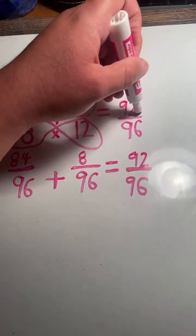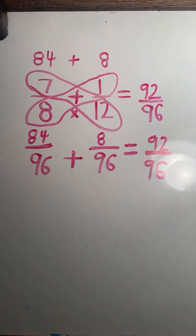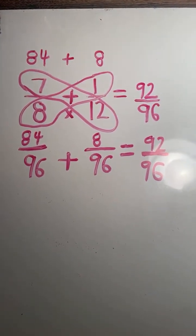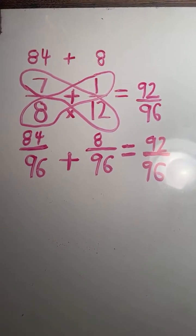We have our answer. 7 eighths plus 1 twelfth equals 92 over 96.